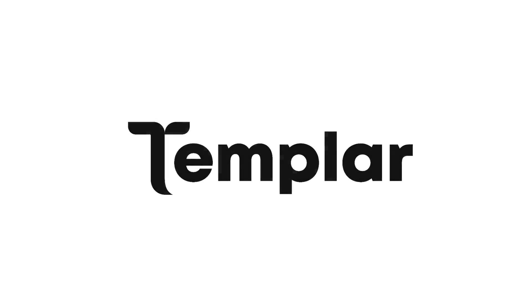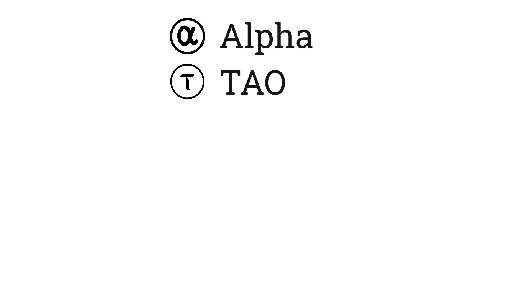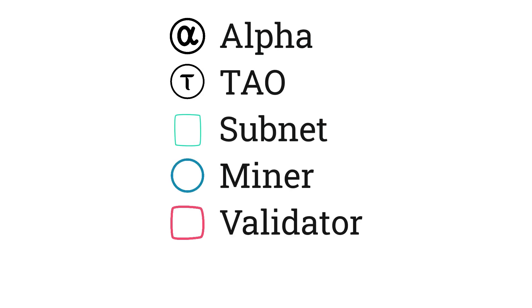Hey, this is Travis. Understanding BitTensor can be difficult. We hear lots of terms like alpha, tau, subnets, miners, validators, stakers, etc. What do they all mean and how do they relate to each other?